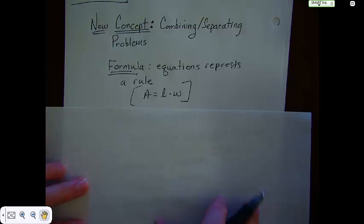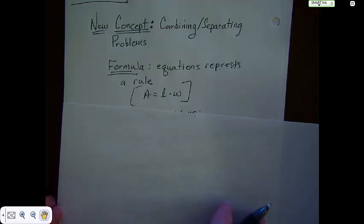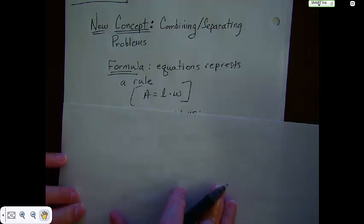One type we do are formula problems. We have a rule that we use every time, for instance, to find area. Perimeter is another one where we add all the sides together, and then we have a rule to do that, and you just add them all.